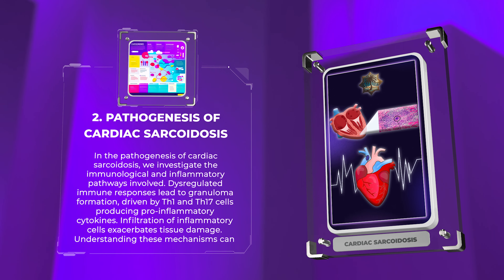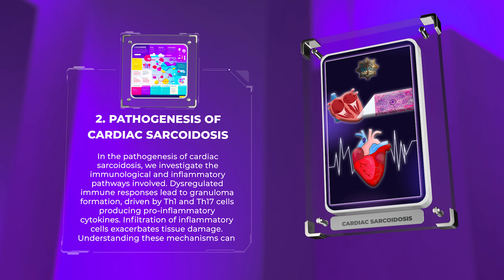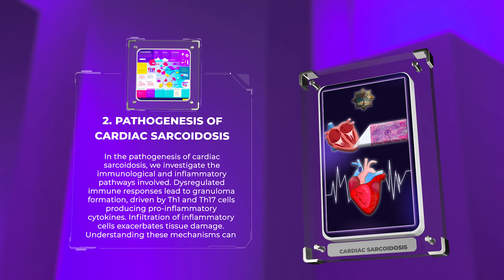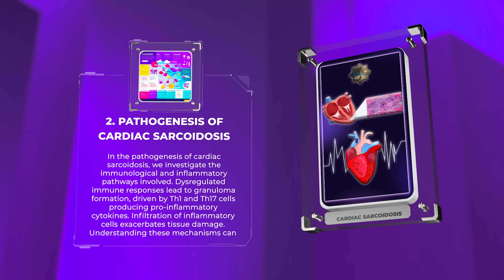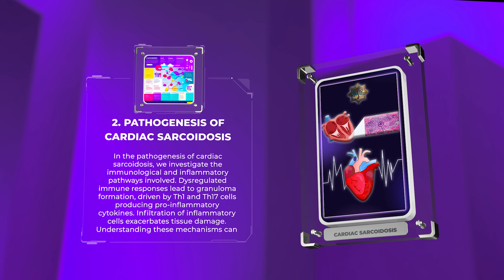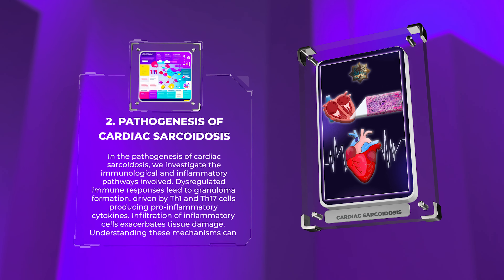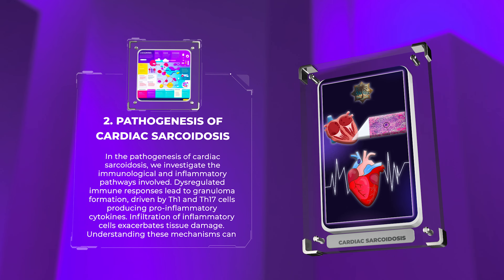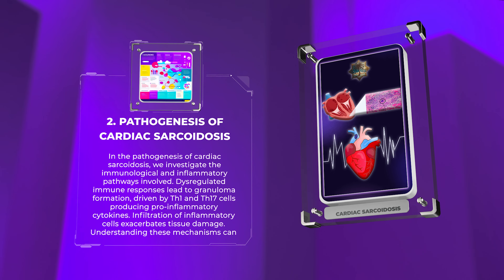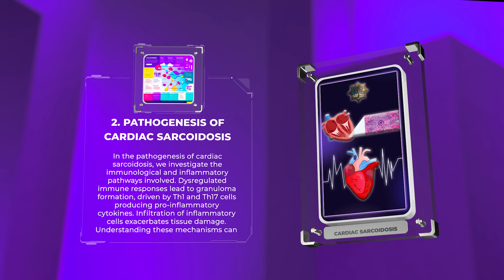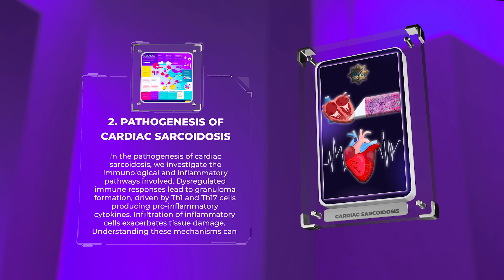In the pathogenesis of cardiac sarcoidosis, we investigate the immunological and inflammatory pathways involved. Dysregulated immune responses lead to granuloma formation, driven by Th1 and Th17 cells producing pro-inflammatory cytokines. Infiltration of inflammatory cells exacerbates tissue damage. Understanding these mechanisms can inform targeted treatments.